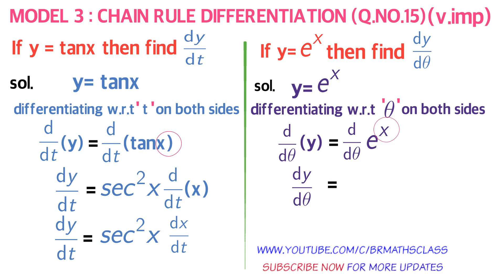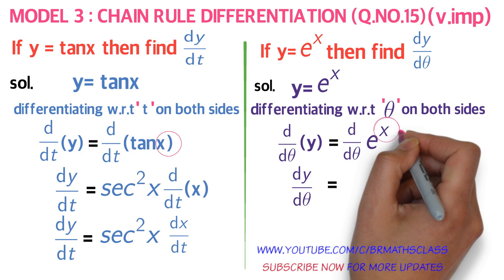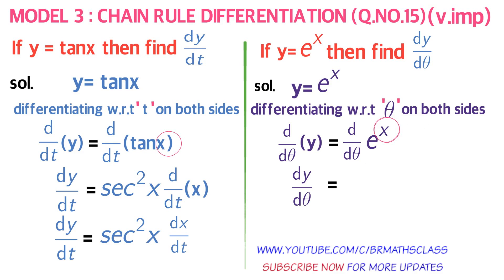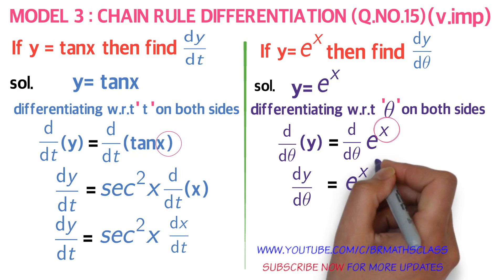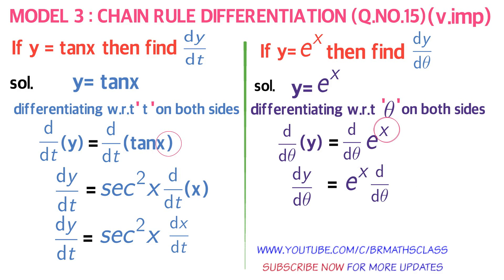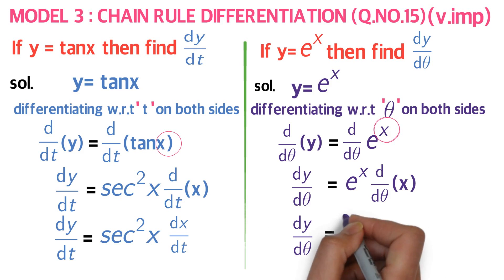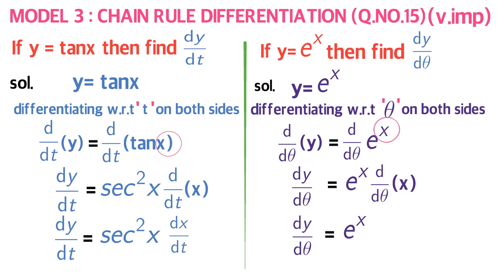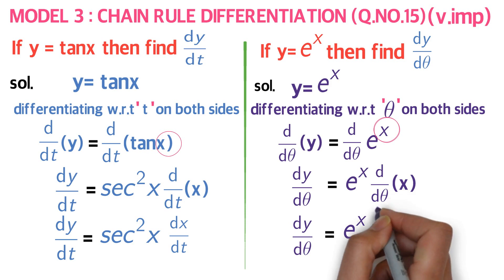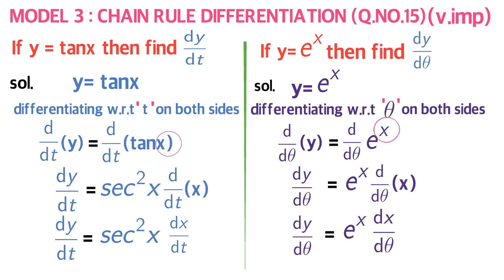Observe d/dθ of e^x — imagine x as theta, so it looks like d/dθ of e^θ, which equals e^θ. Substituting back, theta is x, so we get e^x. By the chain rule, we also differentiate x with respect to theta, giving dx/dθ. Therefore, if y = e^x, then dy/dθ = e^x · dx/dθ.